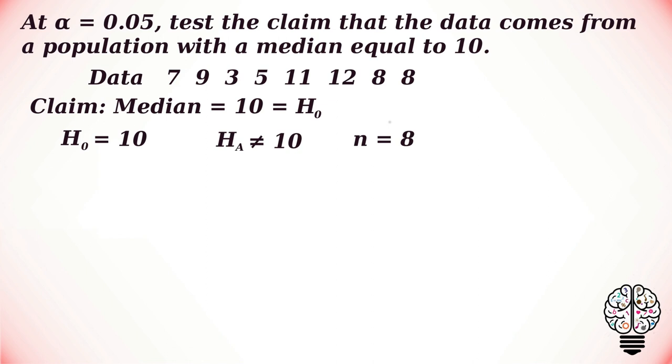This is called a sign test as we assume positive and negative values to these numbers. In our case, there are two positive and six negative. In case any of our data value has the value equal to 10, we have to cross it. In our case, 10 is our null hypothesis. Our data set has nothing like that, so moving on to the next step.